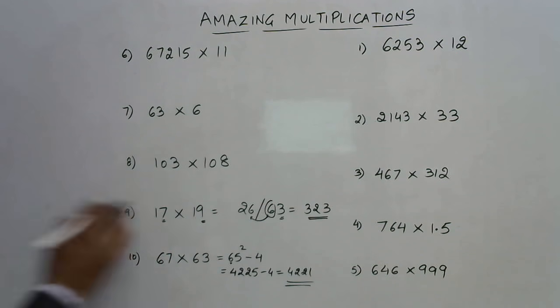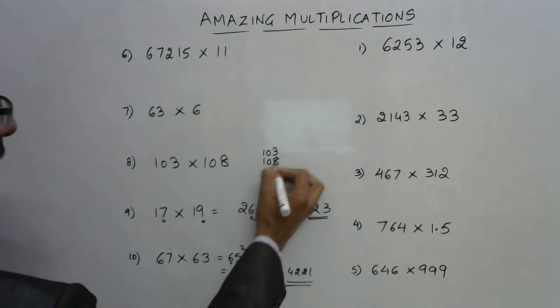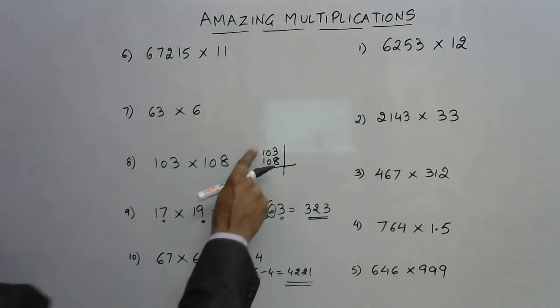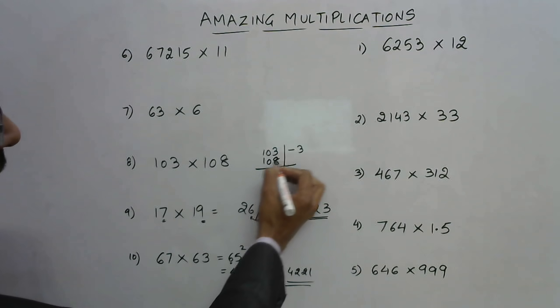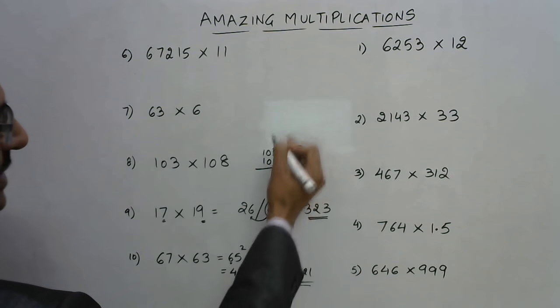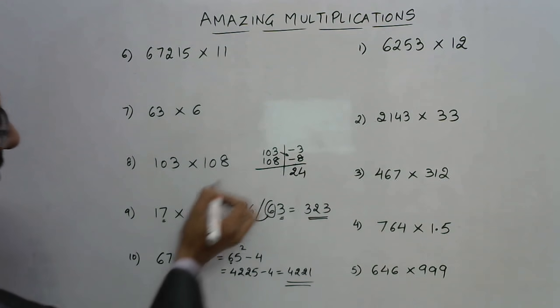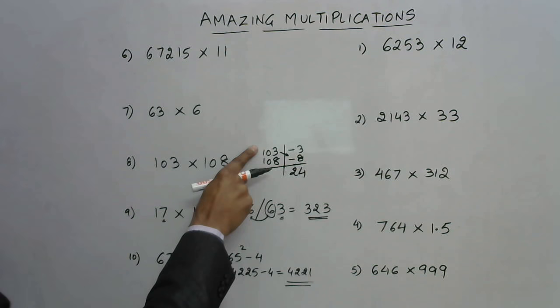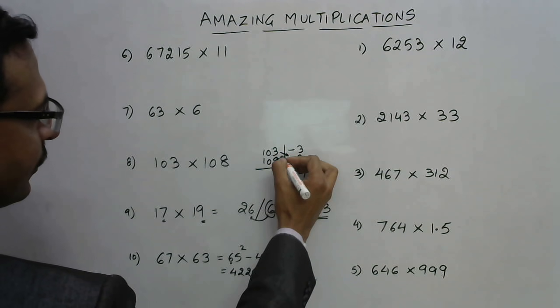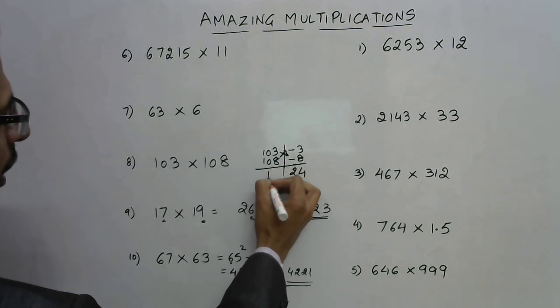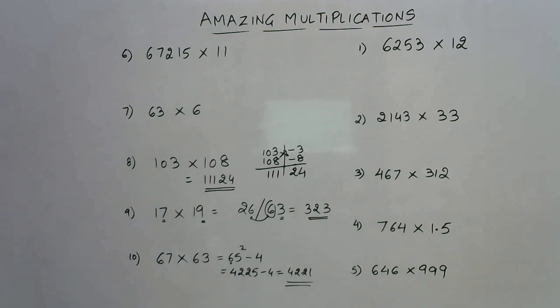Next one, 103 into 108. We write 103 and 108 one below the other, and I see how much 103 is above 100. 100 minus 103 is minus 3, and 100 minus 108 is minus 8. Now take the product of these excess quantities. Minus 3 and minus 8, the product will be 24. Then you subtract: 103 minus minus 8 gives you 111, or 108 minus minus 3 also gives 111. So your answer is 11124.